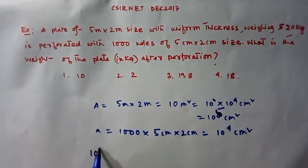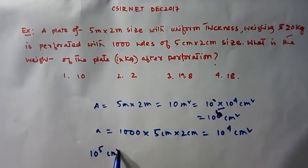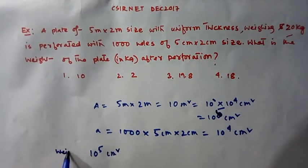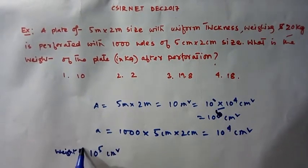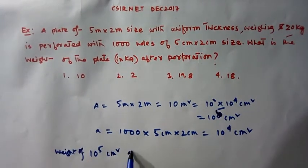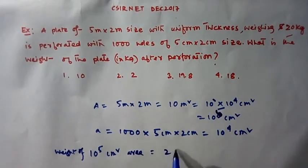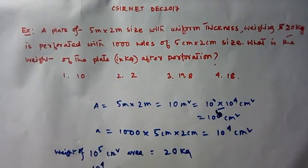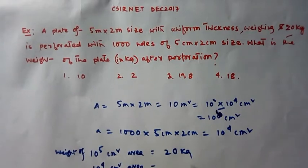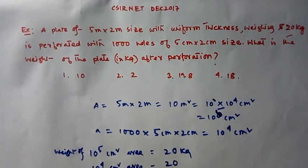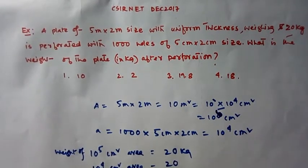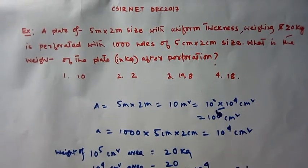Weight of 10⁵cm² area is 20 kg. Therefore, the weight of 10⁴cm² area will be 20 divided by 10⁵ times 10⁴, which equals 2 kg.